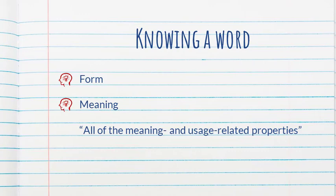Let's talk a little bit about what it means to know a word. Of course, we need to know properties about its form: how is it spelled, how is it pronounced. And we need to know properties about its meaning — what does it mean. It's not simply knowing the translation, and as we know, some words have multiple translations. As the author points out, it's about all of the meaning and usage-related properties of a word. That includes where it can appear in a sentence, connotations, what morphosyntactic properties it has, etc. So it is definitely very complex to really know a word.